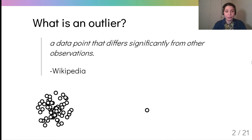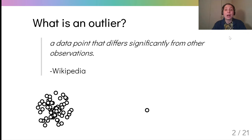Hello, I'm Violeta Roisman and I'm presenting Outlier Redemption for the USR Conference. Let's start with the definition from Wikipedia: an outlier is a data point that differs significantly from other observations.